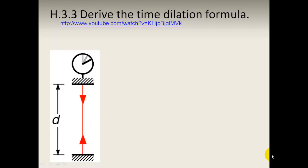We need to be able to derive the time dilation formula, which is a piece of mathematics done by Lorentz. It is based on Pythagoras, so any third-grade student should be able to understand the maths. We have our light clock, where light is bouncing from the top to the bottom and back to the top again.